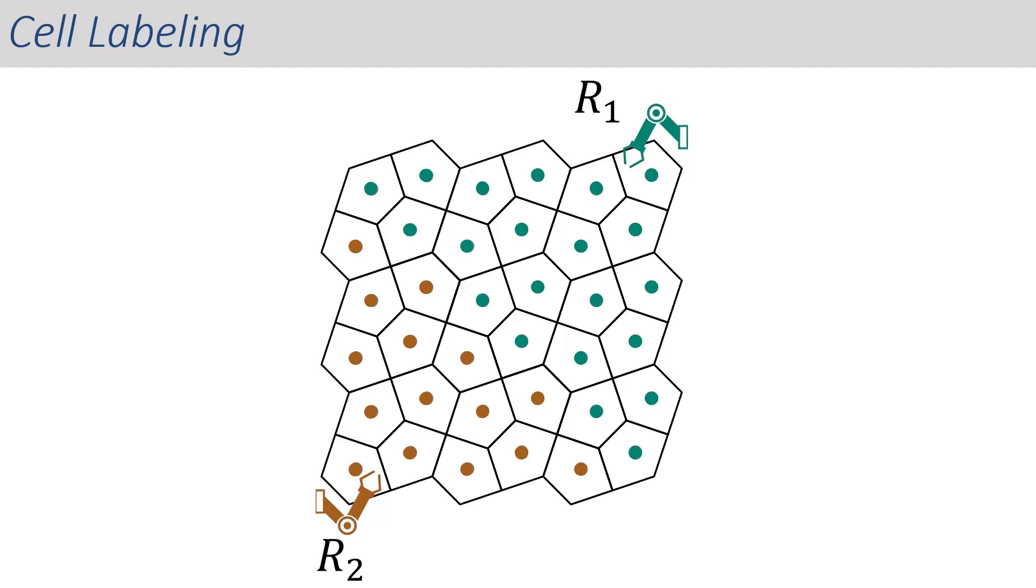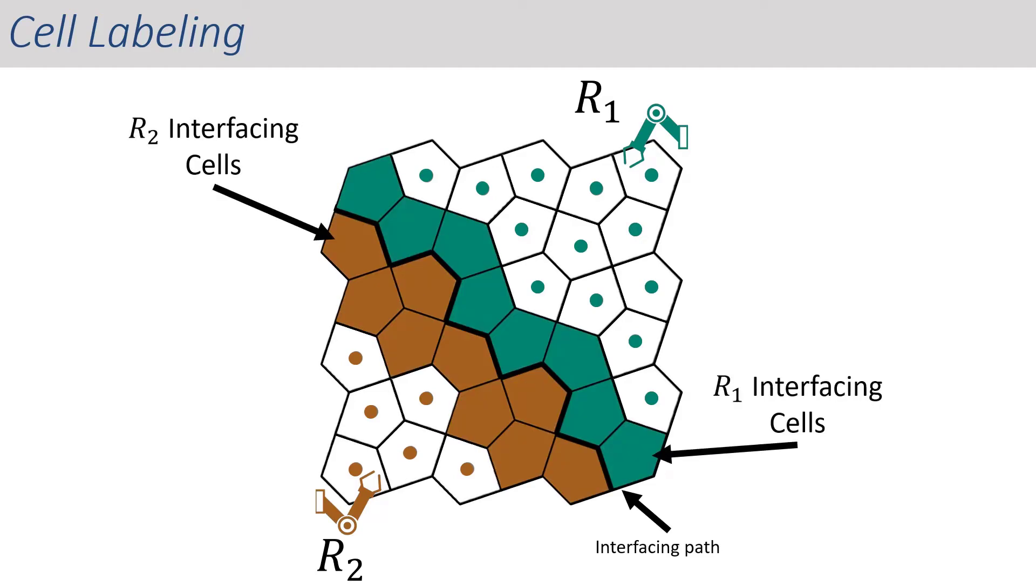In other words, we can define a continuous path that splits the layer into two regions. We call this the interfacing path, which is simply a sequence of edges which are shared by cells with different labels. The cells that contain the vertices and edges of the interfacing path are the interfacing cells. All other cells are the non-interfacing cells.